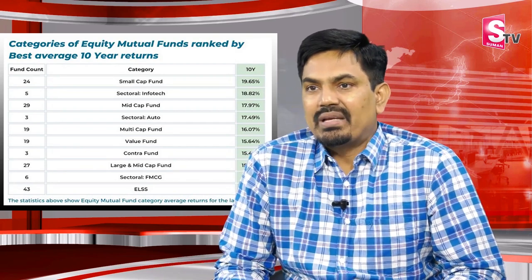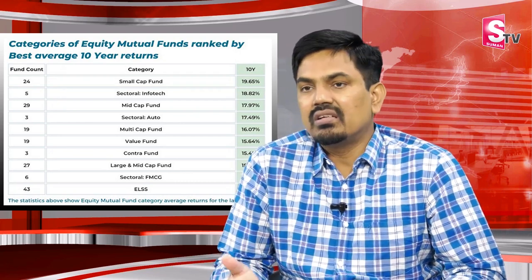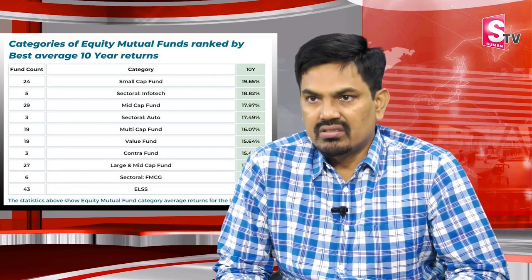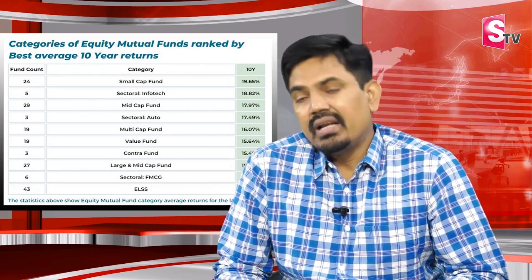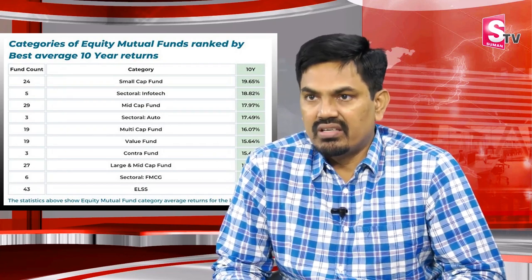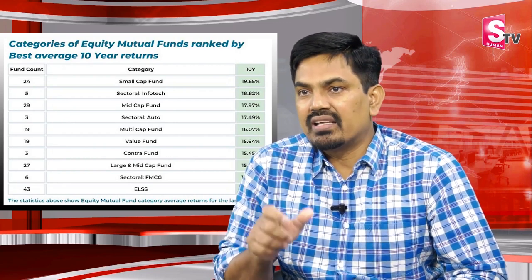If you look at the market, you will understand the pattern. In the last 10 years, if you pick the small cap category, that's the best total category. If you have the best mutual funds, you will get around 25% returns. In India, there are 15 AMC companies offering small cap funds. There are direct and regular options — and 3 plan varieties: growth, dividend, and reinvestment.